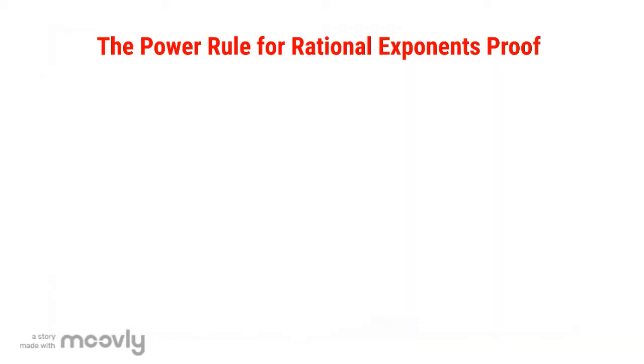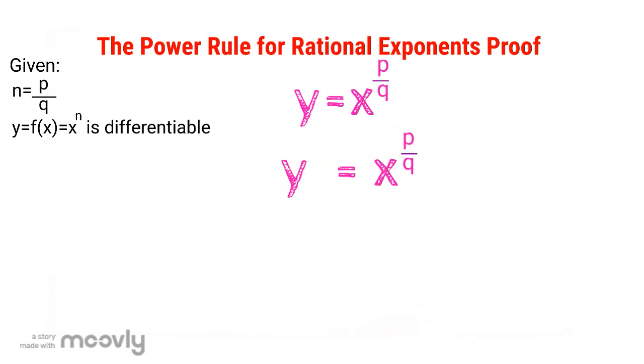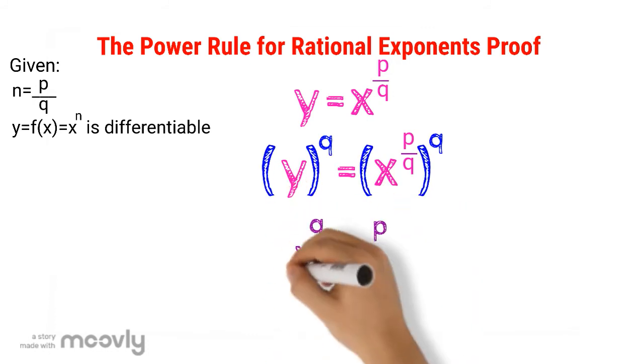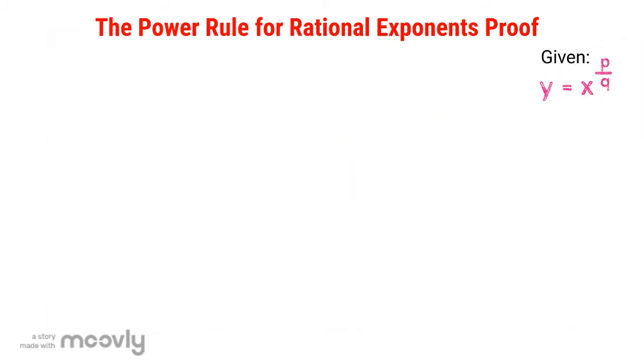Now let's prove the theorem. We're given that n equals p over q, and y equals f(x) equals x to the power of n is differentiable. We also know that y equals x to the power of p over q. Now let's go ahead and raise each side to the power of q. That way, we get y to the power of q equals x to the power of p. We know that y equals x to the power of p over q. And our goal is to get y prime equals p over q, x to the power of p over q, minus 1.